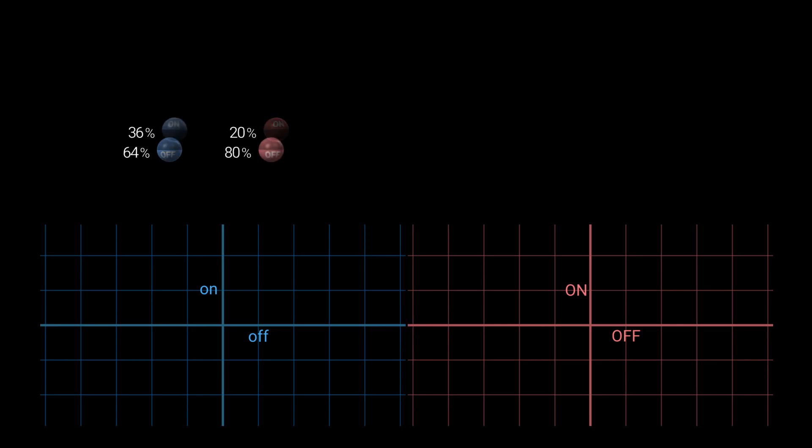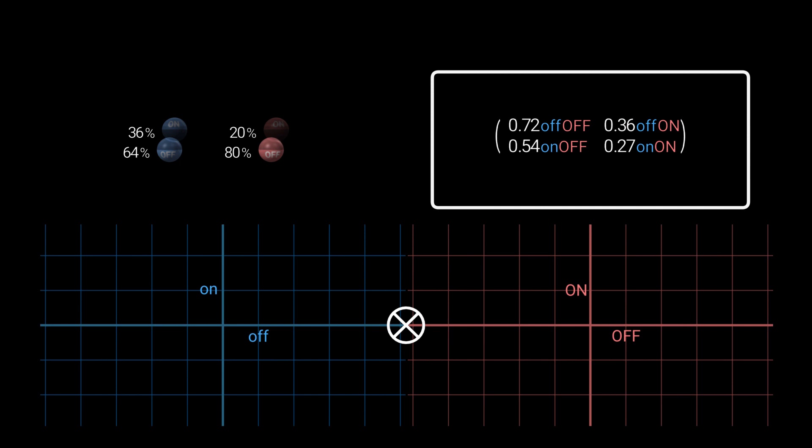But this is not classical physics. In quantum physics, when combining two systems, we need to use a tensor product. Again, we have four axes, but this time they represent combinations of blue and red axes.